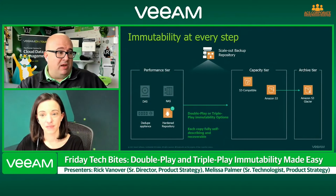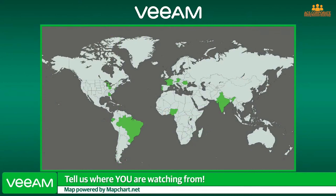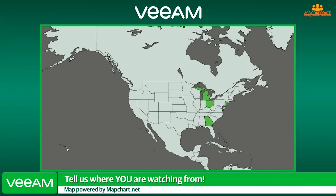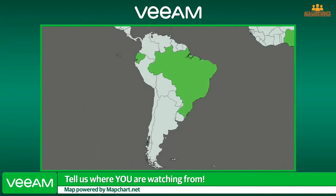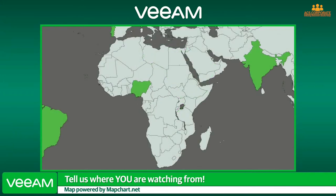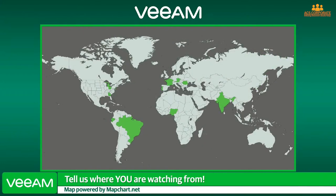We've got an update from the producer: the map is ready and we've got a great crowd. In the US: Michigan, Grand Rapids. In Europe: Austria, Portugal, France — welcome everyone. Down in South America: Brazil, Ecuador. And across the transatlantic combination, Africa has Nigeria, and over there we have India. Let us know where you're from — Czech Republic is watching too!